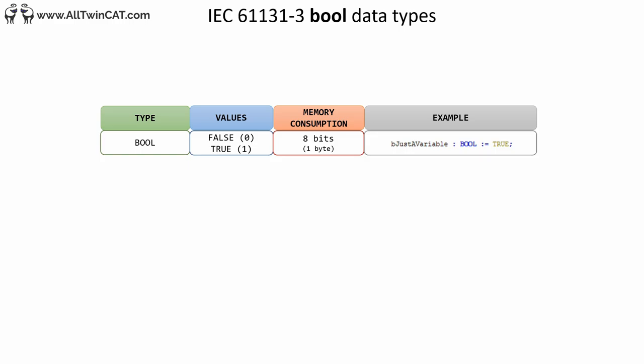We will start with booleans. A BOOL can only hold the value false or true and uses one byte of memory in the PLC. You declare a variable by giving it a name, followed by a colon and a data type. In the declaration, the variable can optionally be assigned a value. If a value is not assigned in the declaration, the variable will get a default value, which for booleans is false.